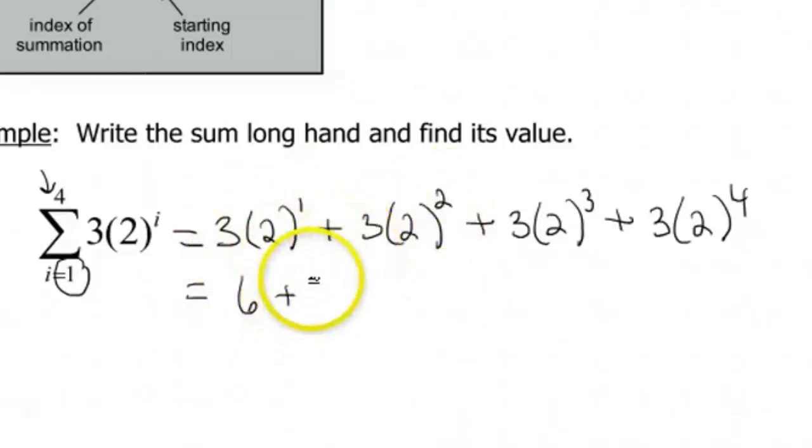2 squared is 4 times 3 gives me 12. 2 cubed gives me 8 times 3 is 24. And then 2 to the fourth is 16 times 3 gives me 48.